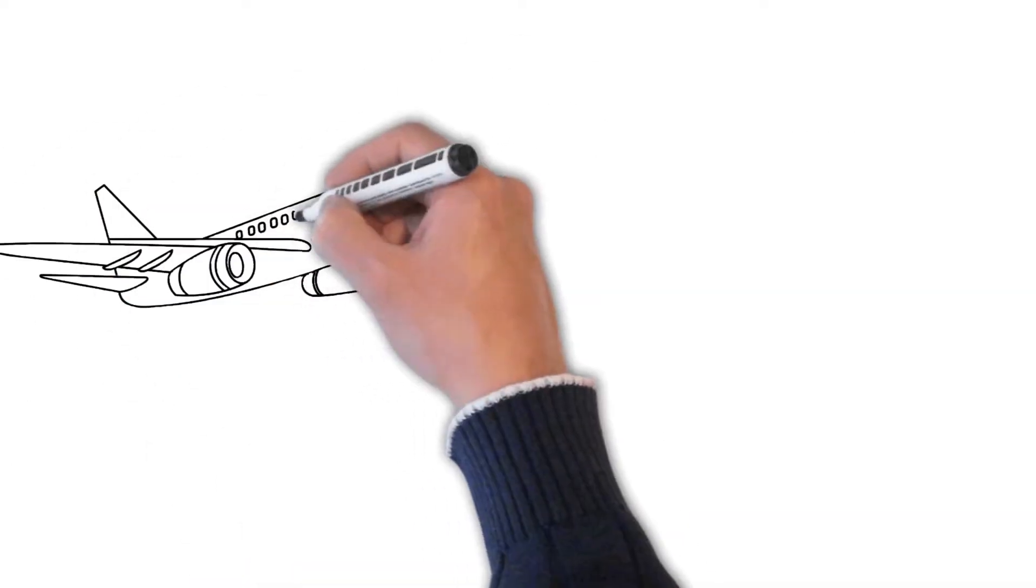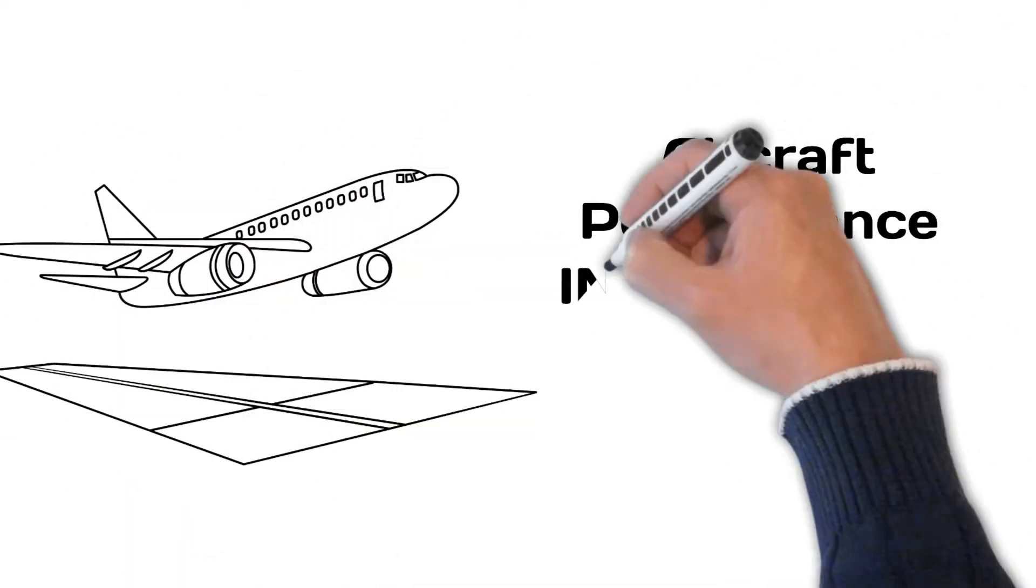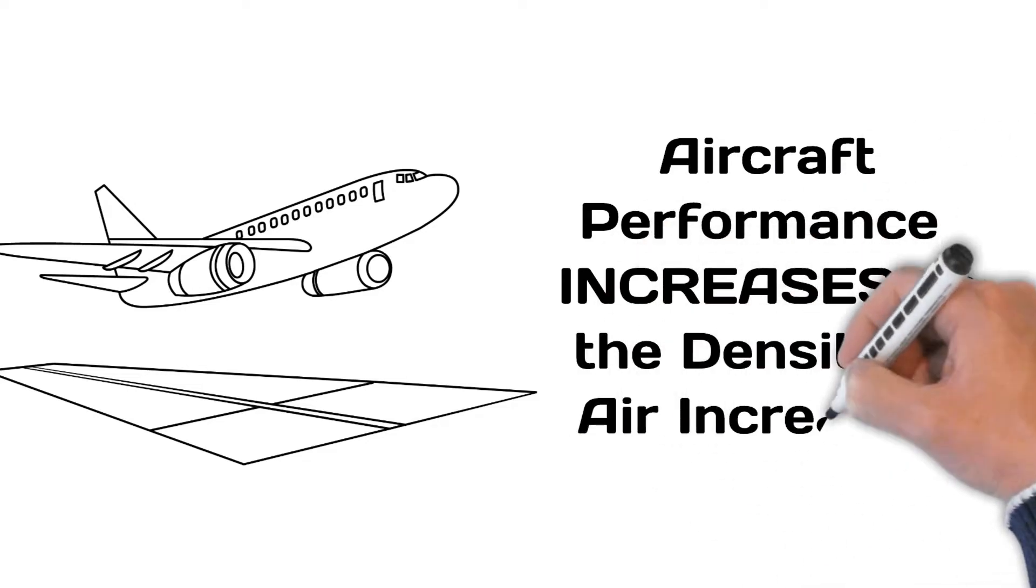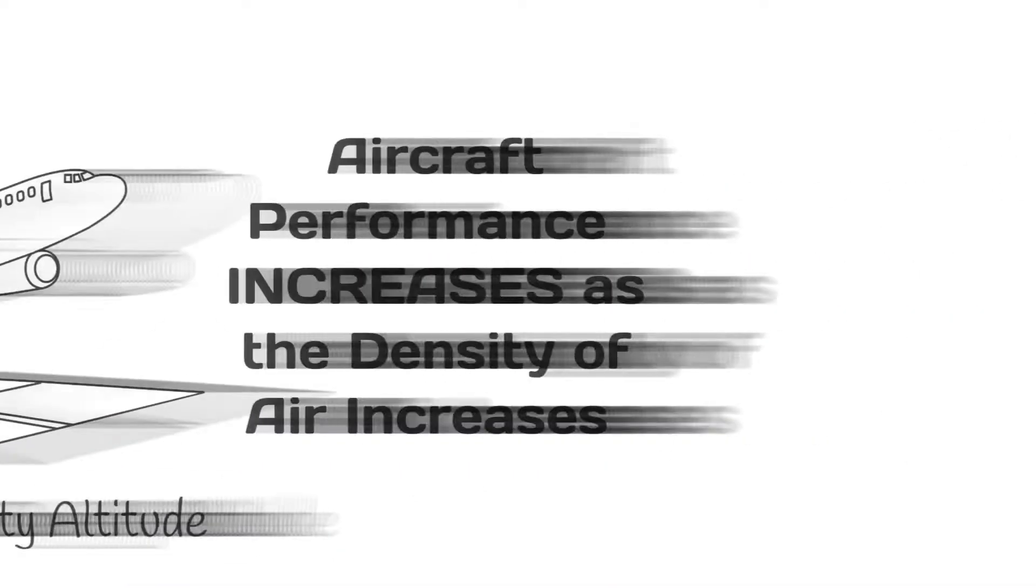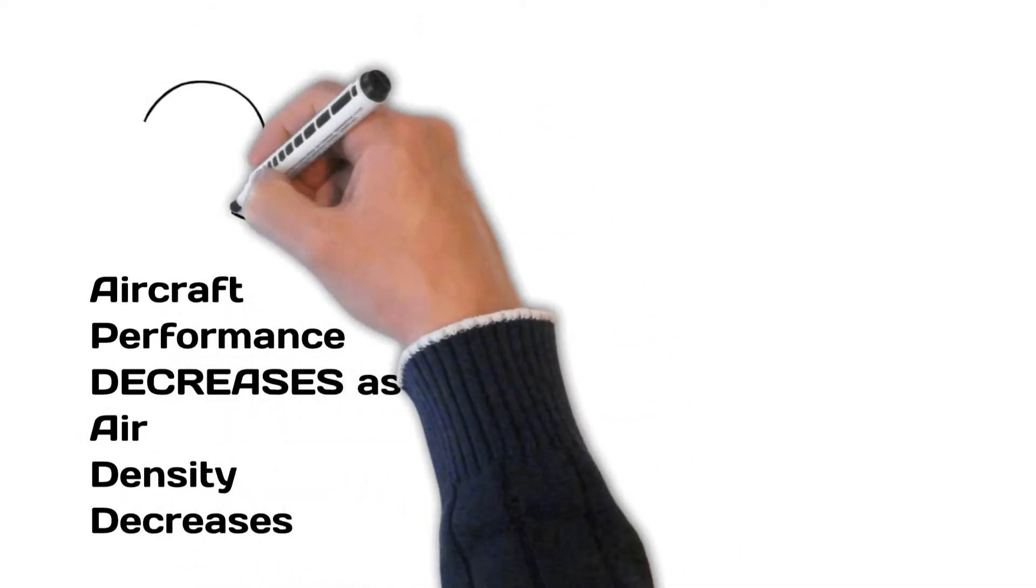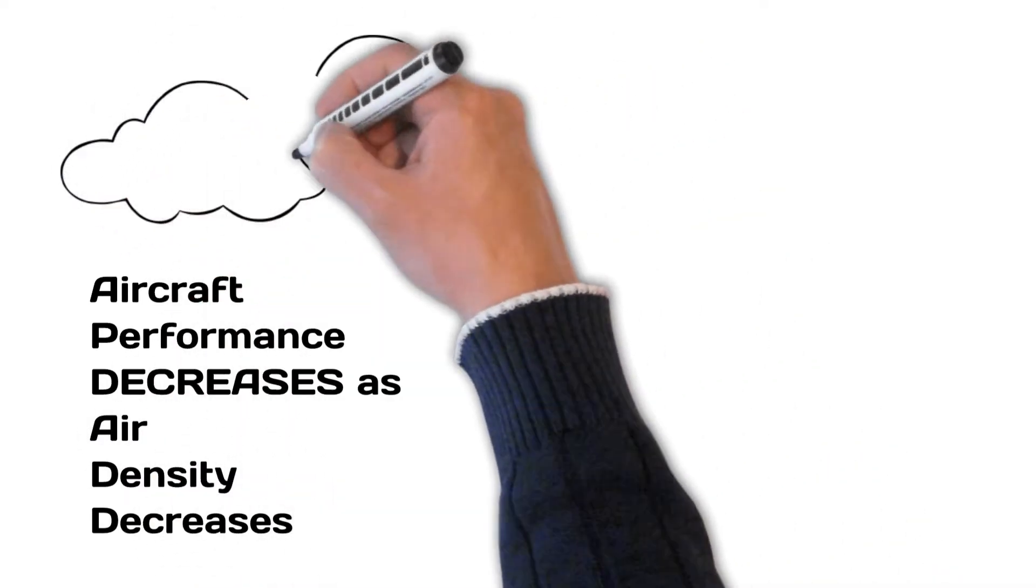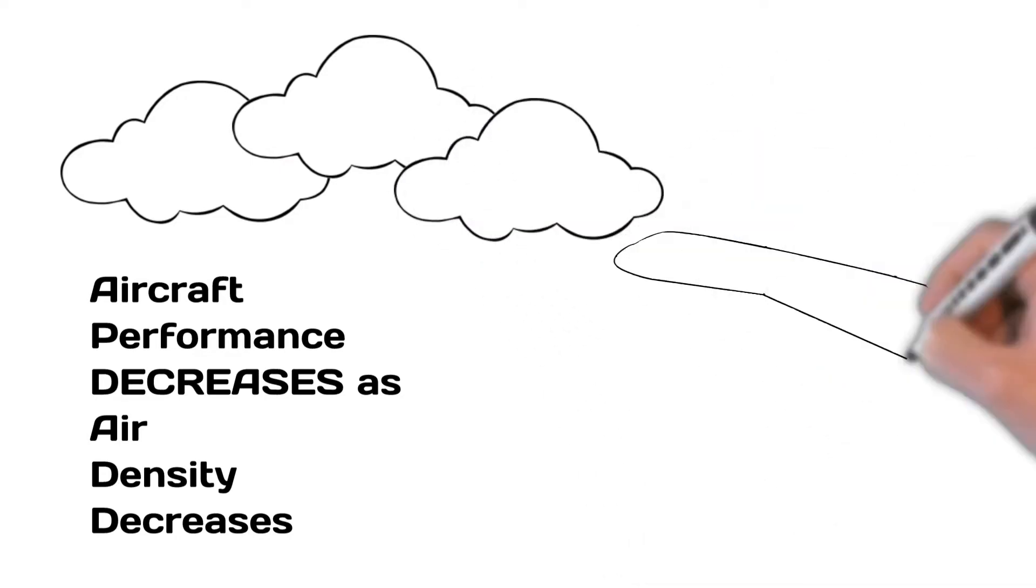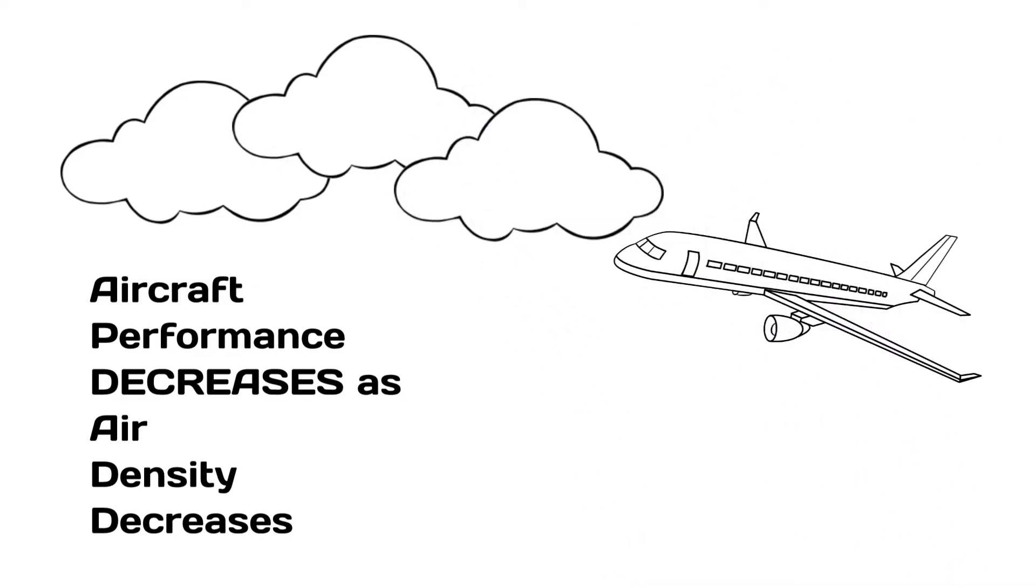Aircraft performance increases as the density of air increases. This is called low density altitude. Conversely, aircraft performance decreases as air density decreases. This is called high density altitude.